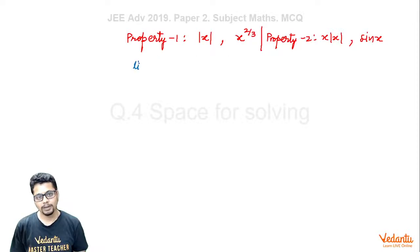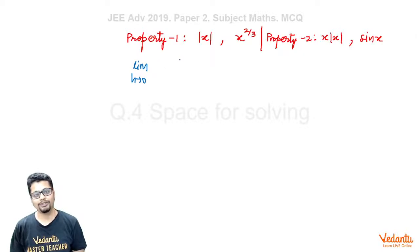For Property 1, lim(h→0) [f(h) - f(0)]/√|h|. For f(x) = |x|, f(h) = |h| and f(0) = 0, so it becomes lim(h→0) |h|/√|h| = lim(h→0) √|h|, which is clearly equal to 0. Therefore, |x| has Property 1.